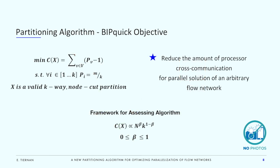This brings us to the objective of our flow network partitioning algorithm, which I've named BIPQUIC. The objective is to reduce the amount of processor cross-communication needed for parallel simulation of an arbitrary flow network. We do that by approximating the minimization of a constrained objective function that mathematically expresses two goals: minimize the number of nodes that exist as boundaries between multiple parts, while ensuring that part size is consistent across each part. Part size is defined here as the total length of links within each part, since in flow networks the length of links between nodes dominates the computational complexity.